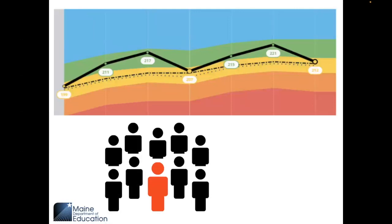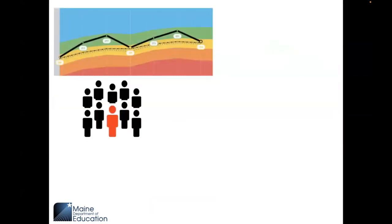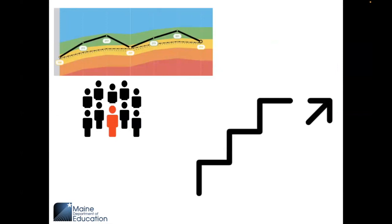The spring Maine Three-Year Assessment administration has been designed to be one assessment that serves two purposes: to produce RIT scores comparable to those from the fall and winter administrations, as well as to produce a Maine-specific summative score that measures achievement according to grade-level state standards and meets federal requirements under the Every Student Succeeds Act.